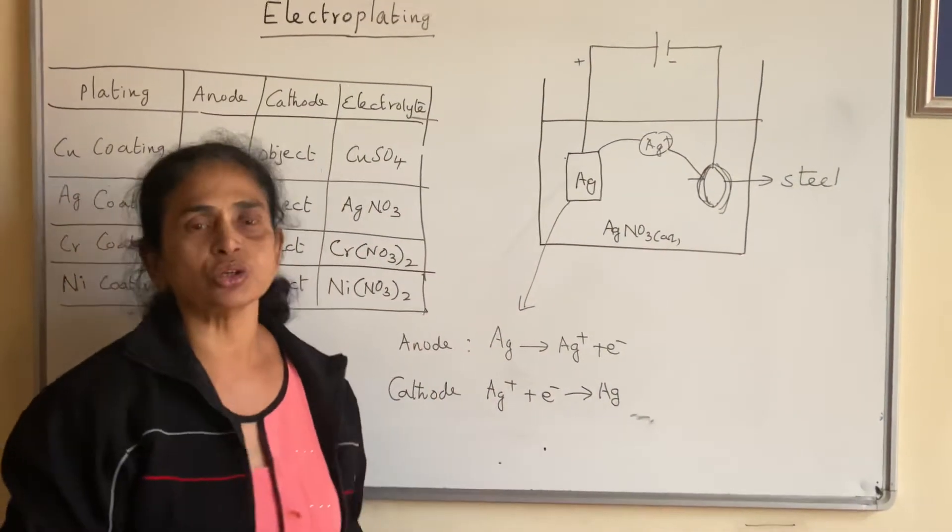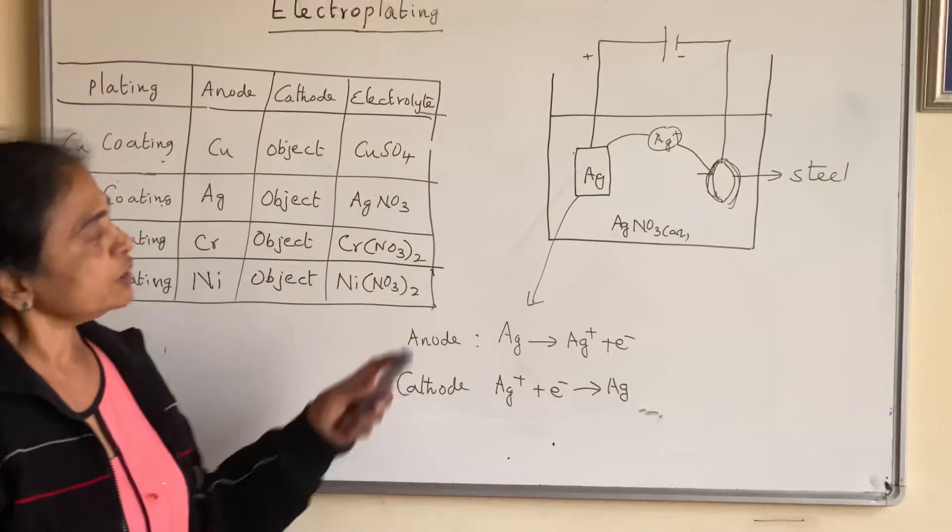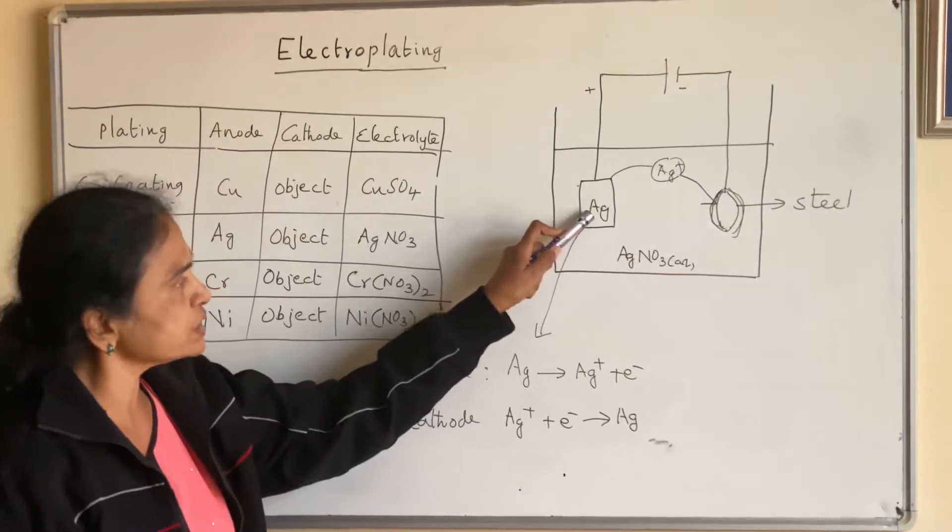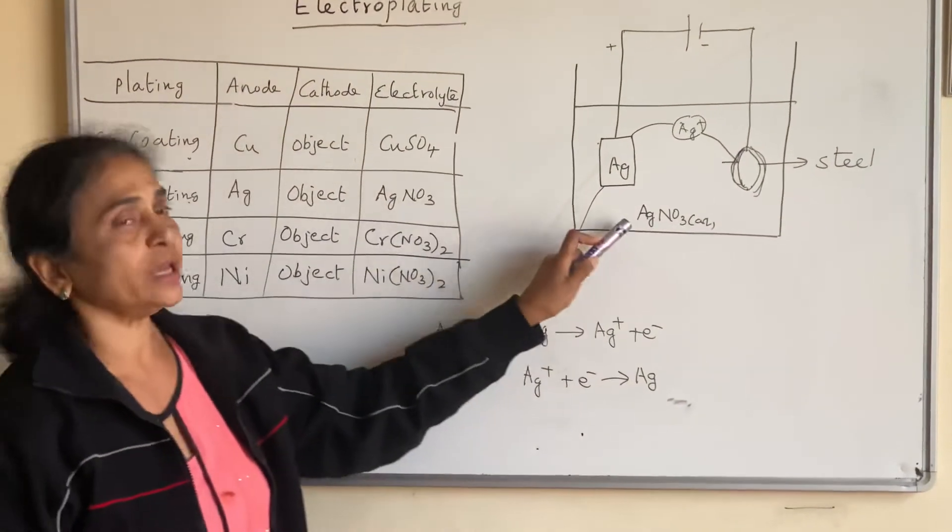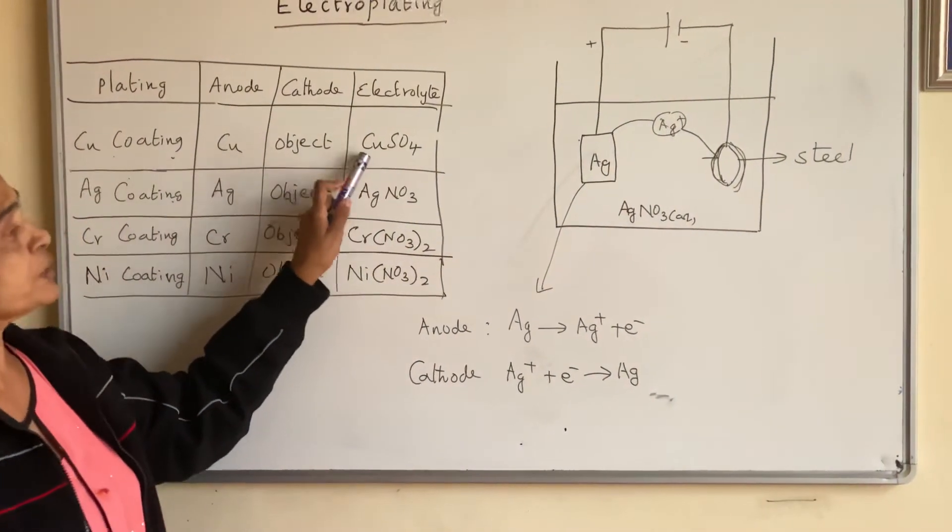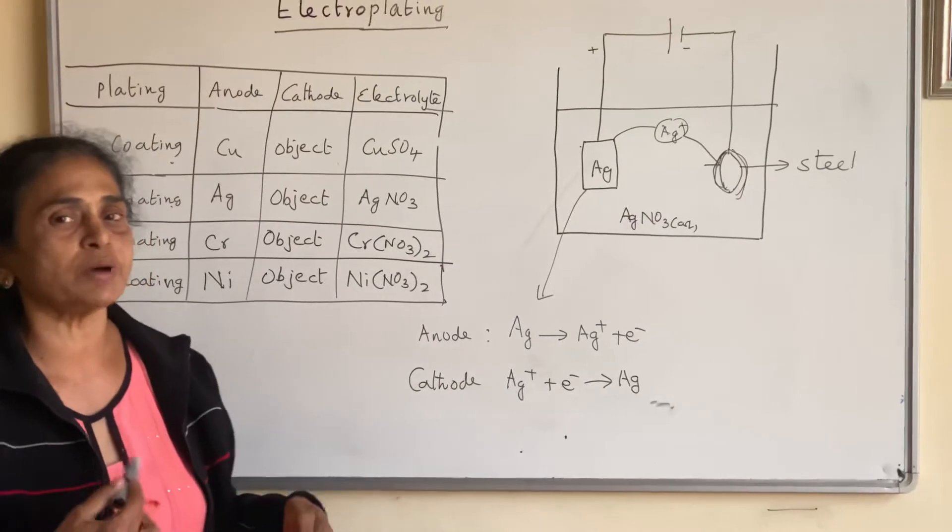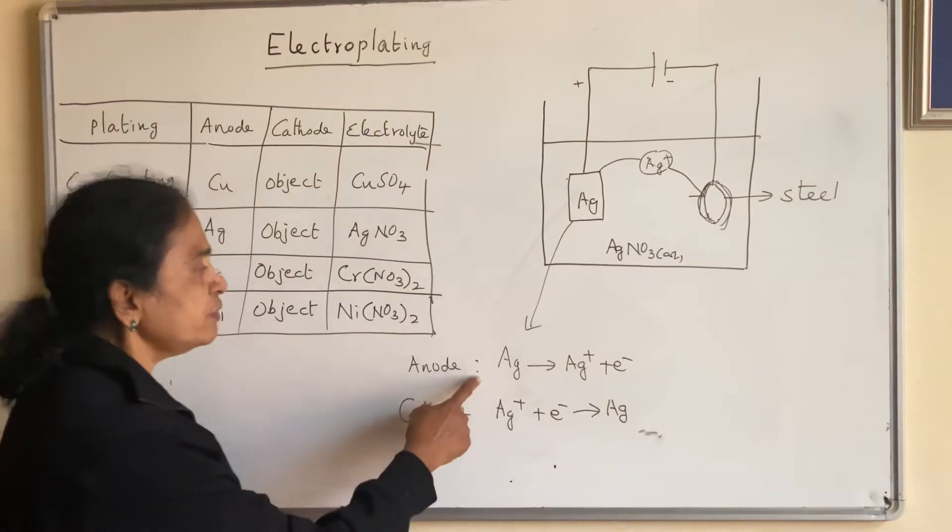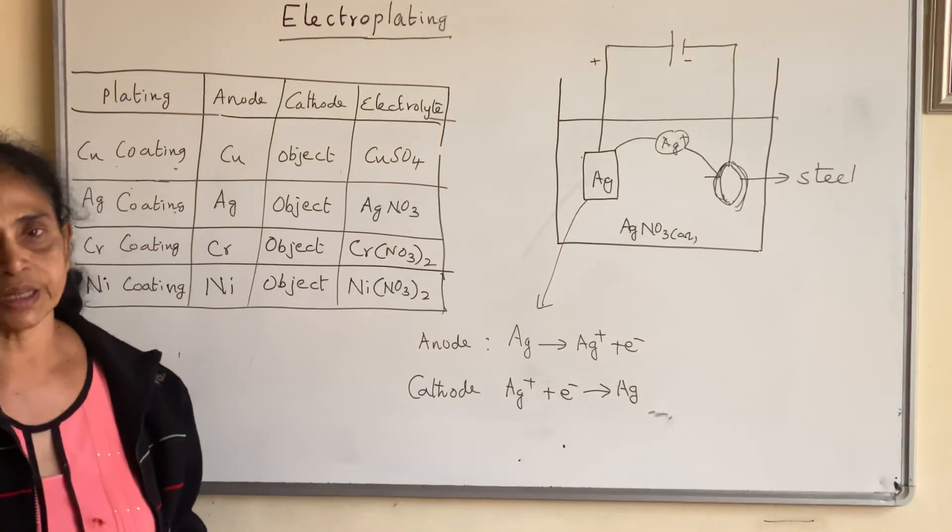Electroplating is done to have a beautiful appearance or to prevent corrosion. If you are doing copper coating to the same spoon, we must remove the silver and replace it with copper, and remove the electrolyte and replace it with copper sulphate solution. It must be a concentrated solution so that enough ions are there to undergo reduction. So the silver undergoes oxidation and Ag+ ions from the solution undergo reduction.